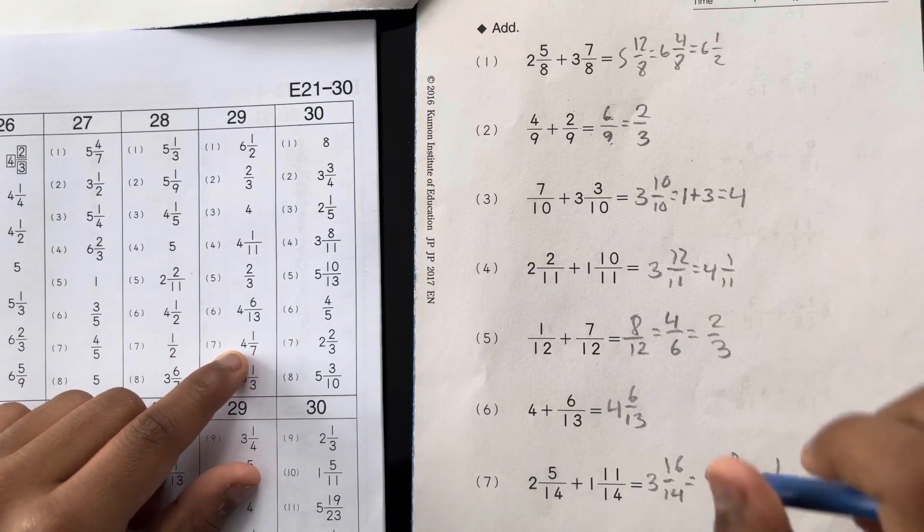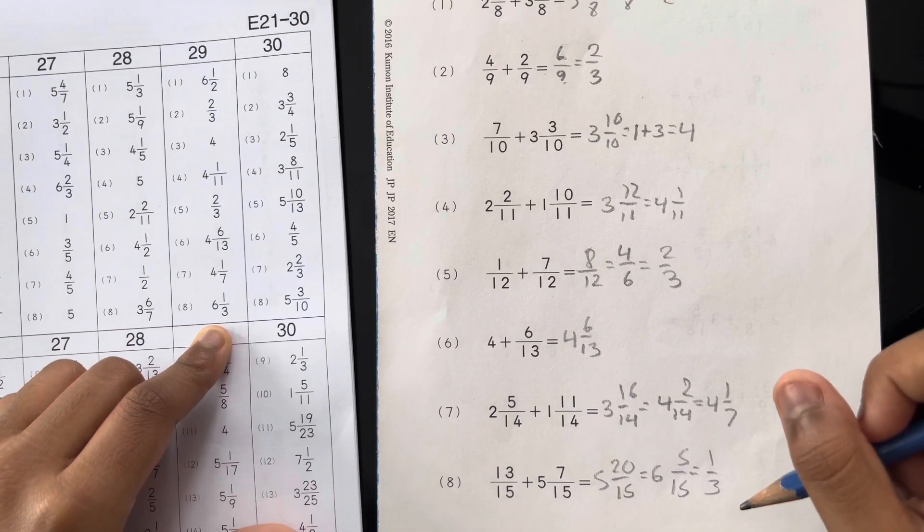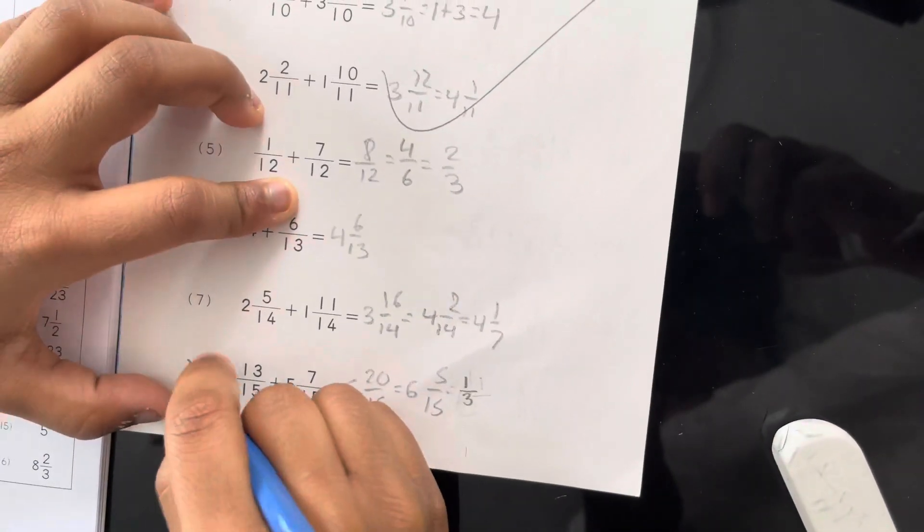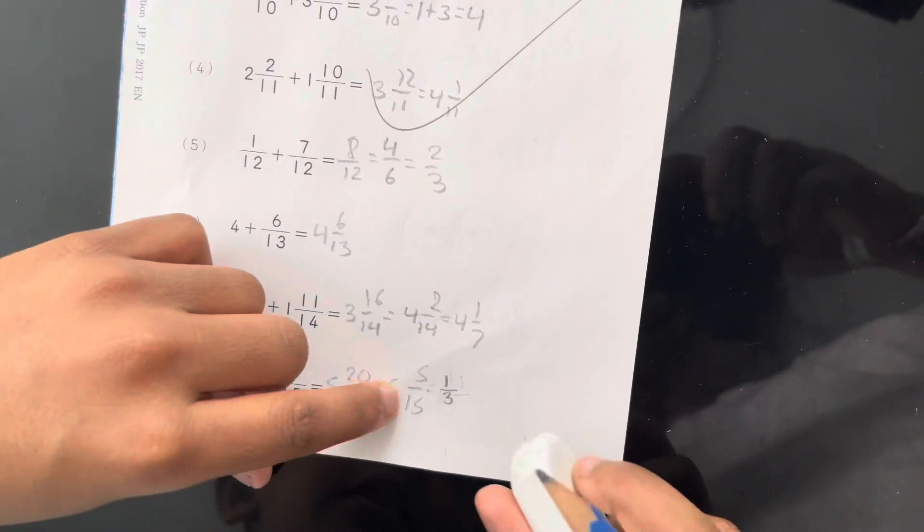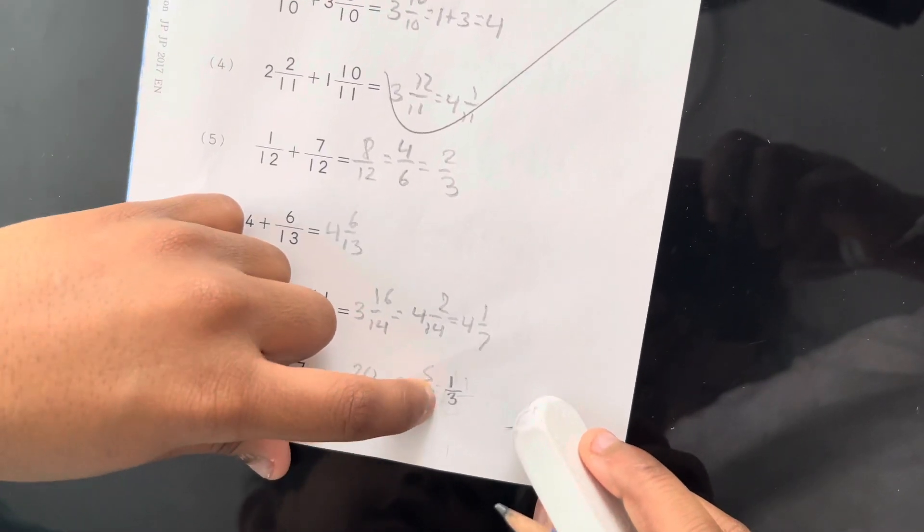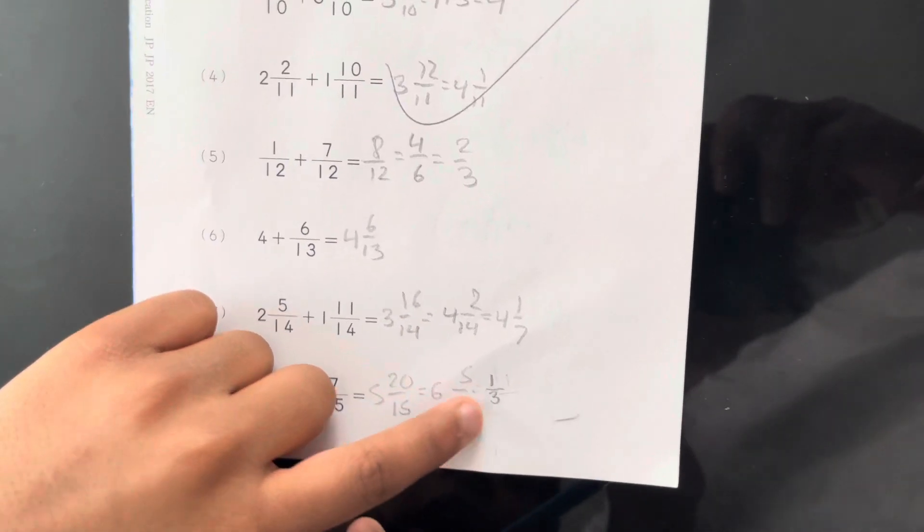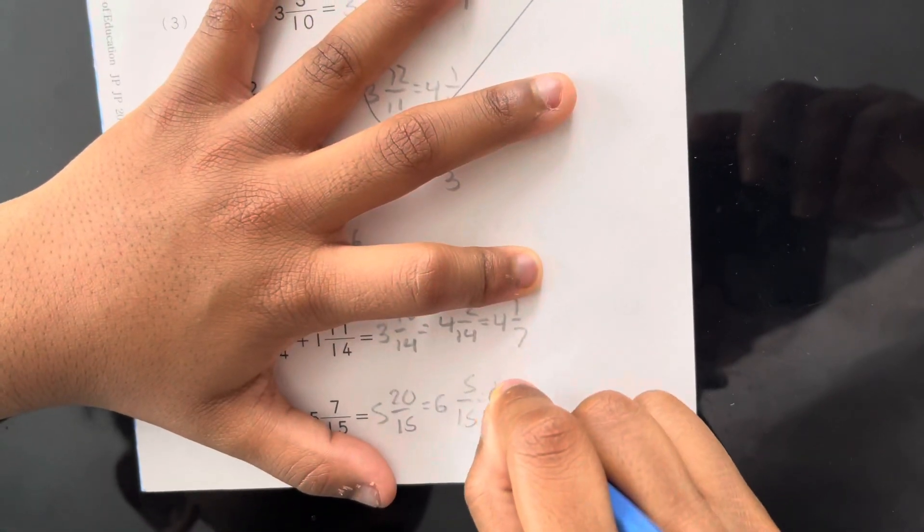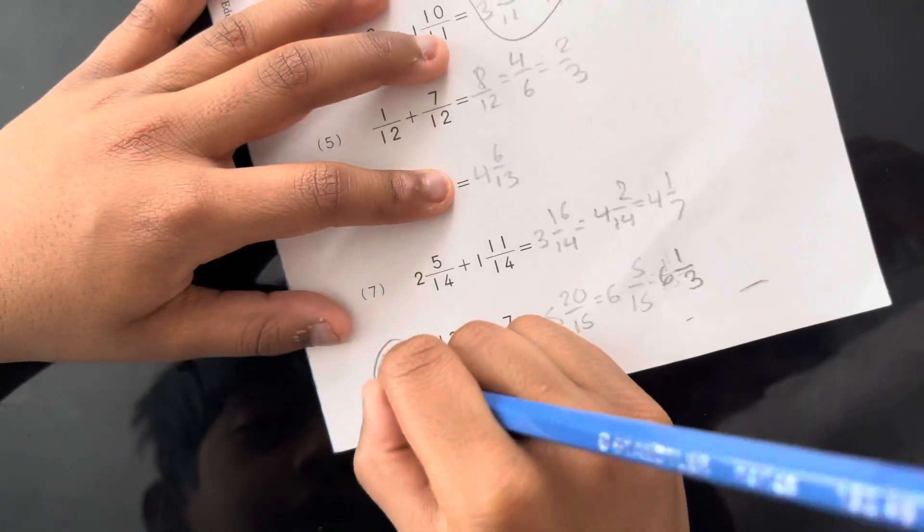4 and 1 over 7, correct. 6, 6, 6 and 1... I made a mistake here. This is 6 and 1 over 3 because 6 and 6 stays the same, that's why. So 6 and 1 over 3, that's correct.